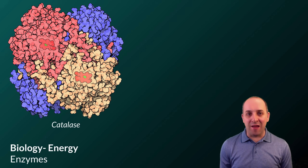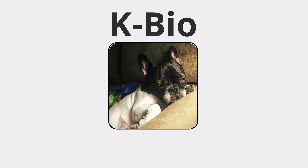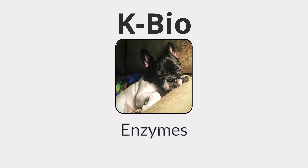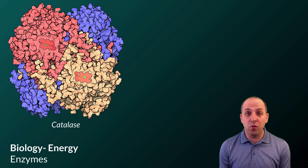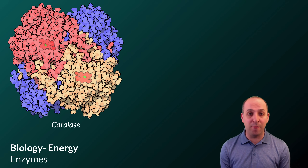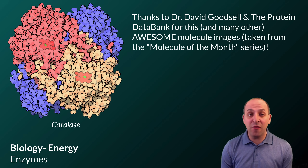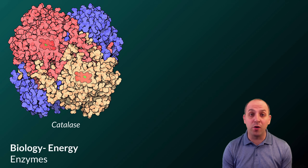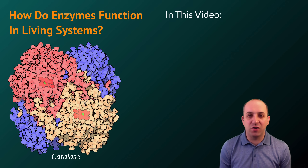Welcome to our video on enzymes. Enzymes are a really big deal in cellular metabolism because they are the molecules that control and carry out almost every aspect of the metabolic reactions that happen inside of every cell on the planet. Catalase, the molecule that you see here, is an example of an enzyme. And just like any other enzyme, it does something really important for living systems. The question we're going to answer in this video is: how do enzymes function in living systems?